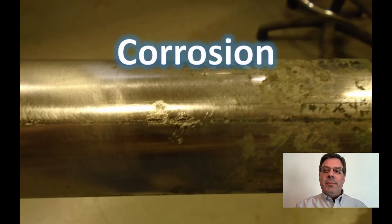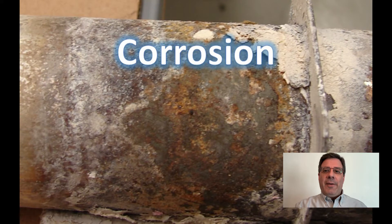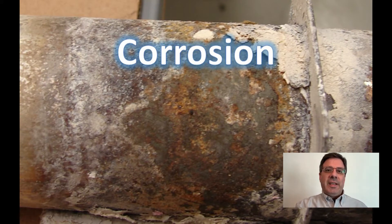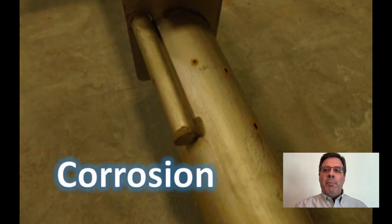The corrosion will eat away the surface material of the heater, ultimately creating holes in the sheath. Once a hole is created, liquid can immediately get inside and cause an electrical path to the grounded sheath. This will trip a ground fault device. But if left to continue, it could eventually melt holes in the heater surface and blow the fuses or trip the main breaker or disconnect.